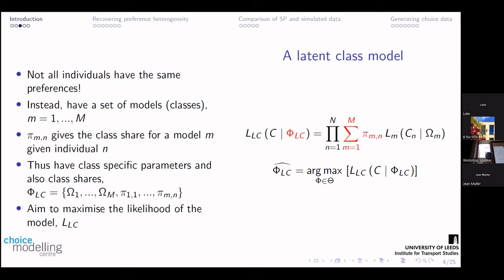A latent class model recognises the fact that not all individuals have the same preferences. So we're going to have a set of models — classes — where the preference for different attributes is different in these different classes. We've got a number of different models and we're going to allocate shares to these models. For example, you might have a model based on random utility maximisation that gets a 60% share, and then a model based on regret minimisation which gets a different share. So you have class-specific parameters and a class share — a class allocation part as well.